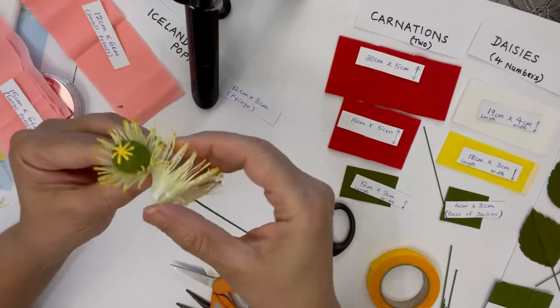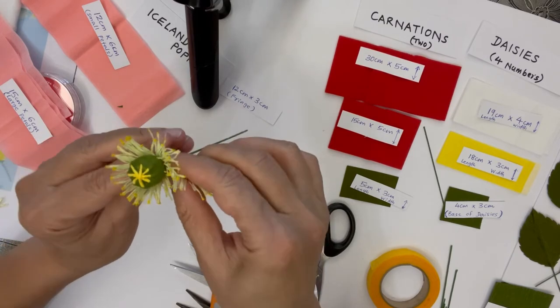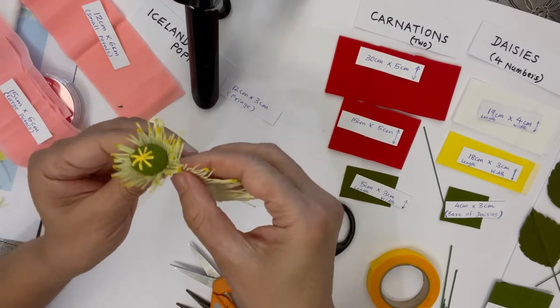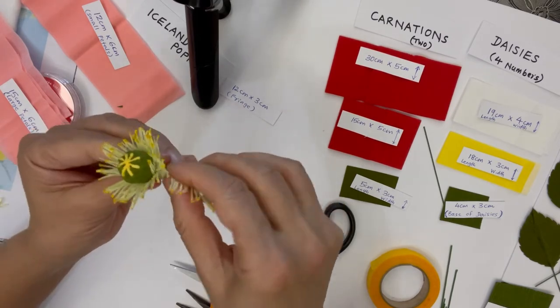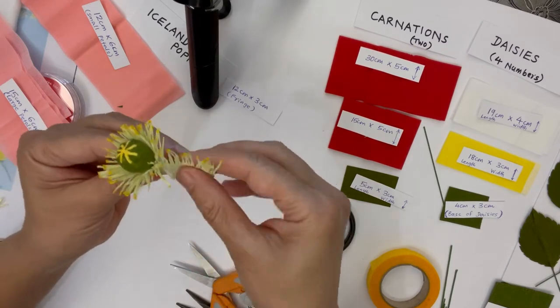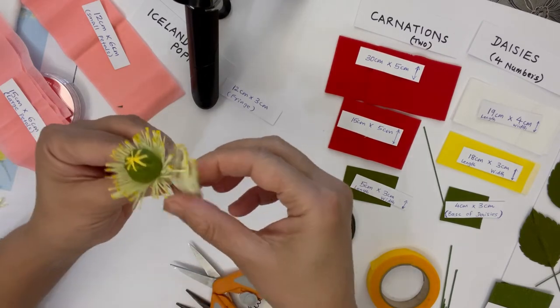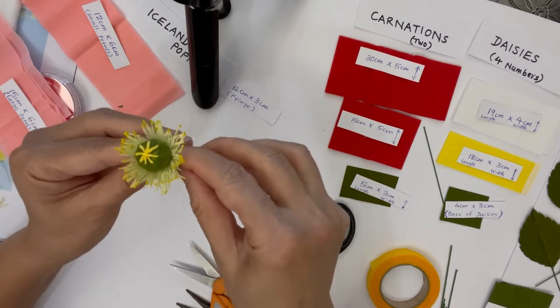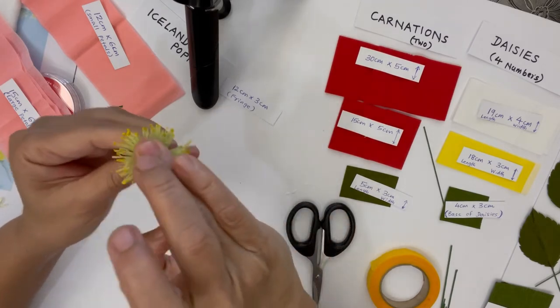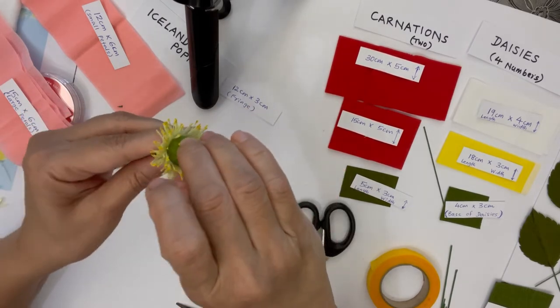You can keep collecting the paper at the bottom, making sort of pleats at the bottom. And that's it. This is how your center will look.